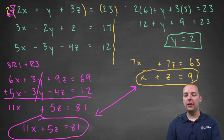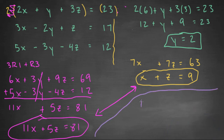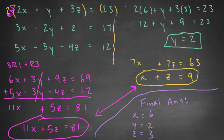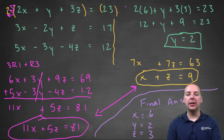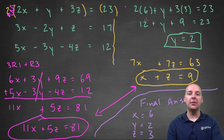So we have our final answer: x equals 6, y equals 2, and z equals 3. We can check this by plugging those values into all three original equations — I'll leave that for you to do. This is a lot of work, and if you slip up in one small place with a sign or arithmetic error, the whole thing can go wrong. But that's how we solve a system of three equations with three unknowns.